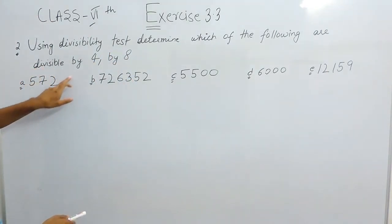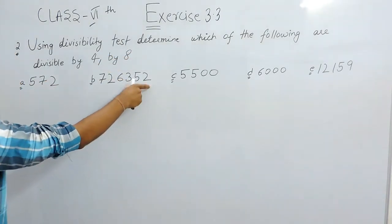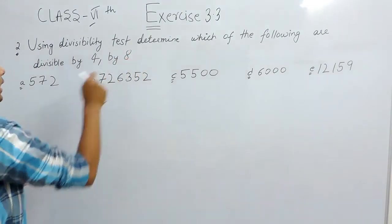So we will start with this question. The divisibility test of 4 is that the last two digits should be divisible by 4, and for the divisibility test of 8 the last three digits should be divisible by 8.